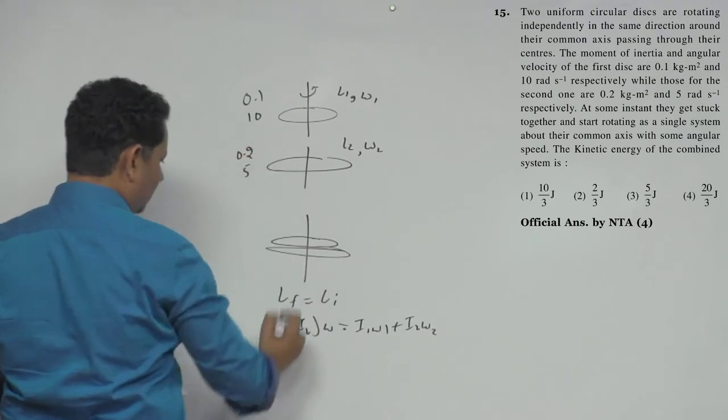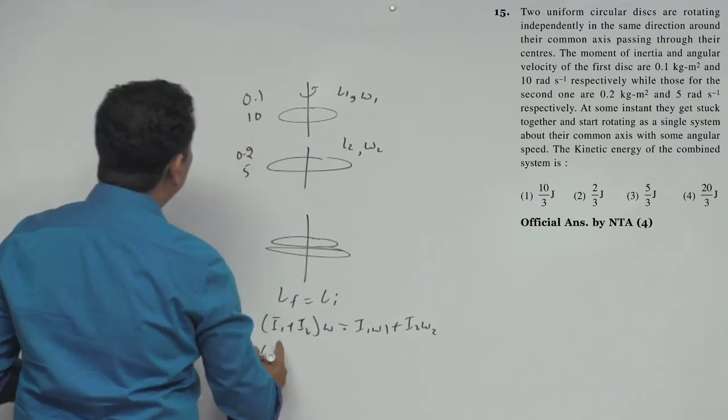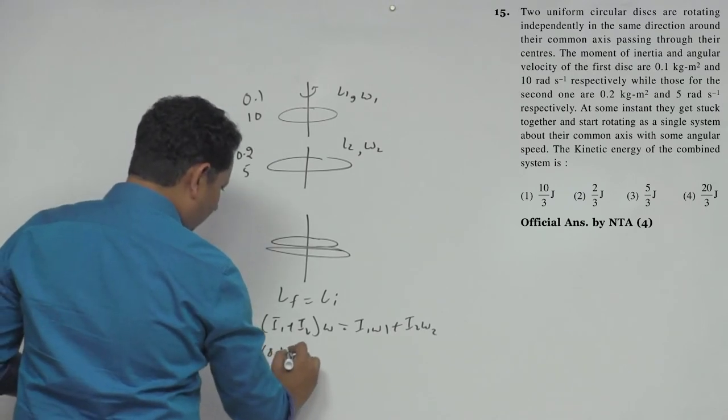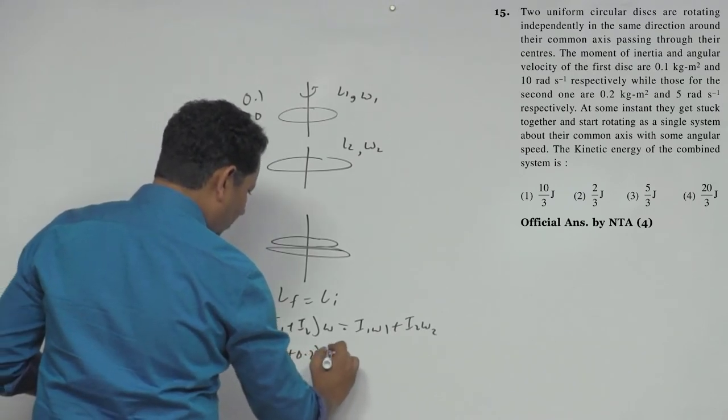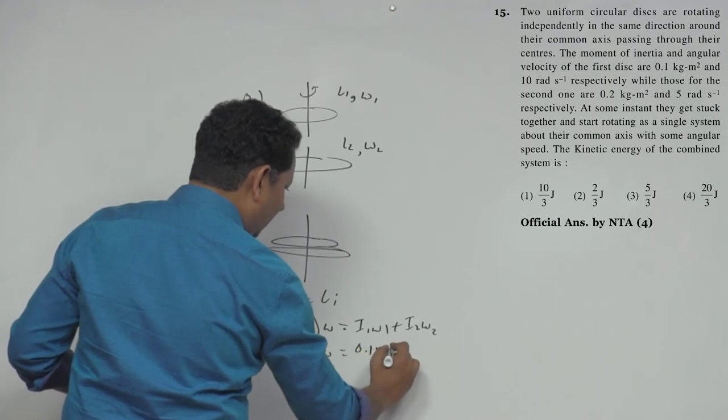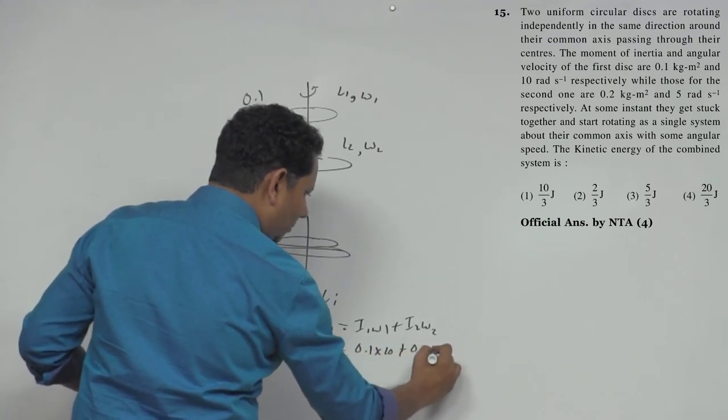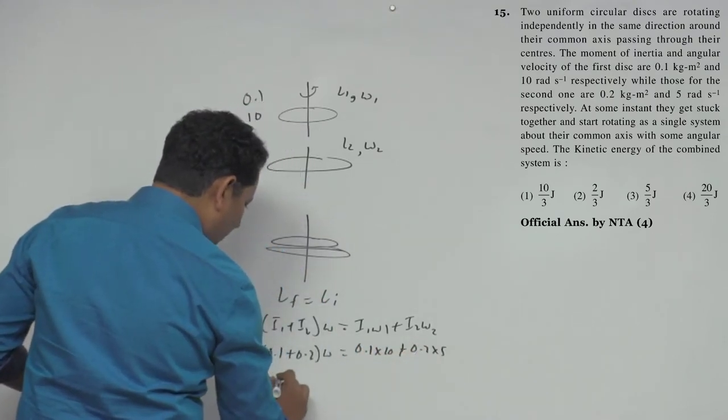So 0.1 plus 0.2 times omega will be equal to 0.1 multiplied by 10 plus 0.2 multiplied by 5, which implies